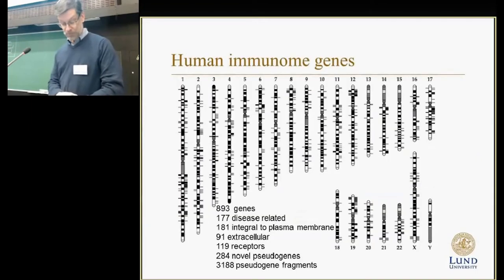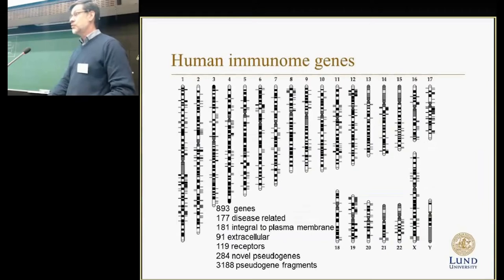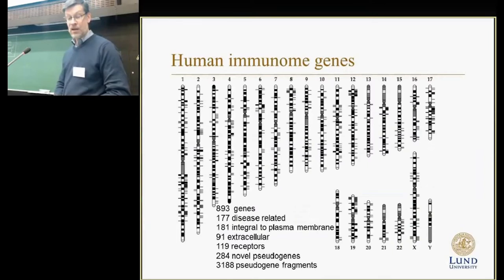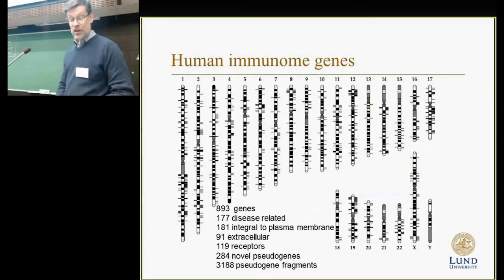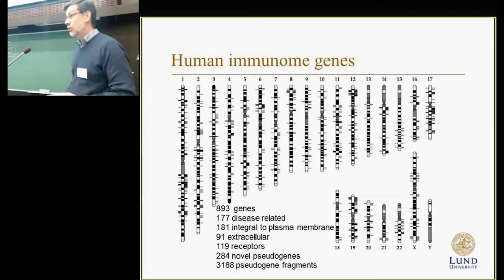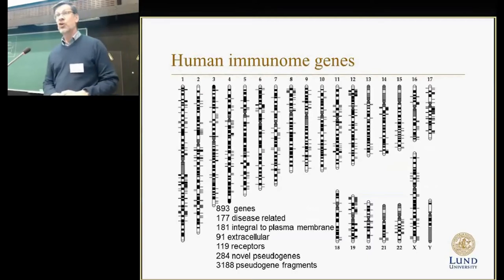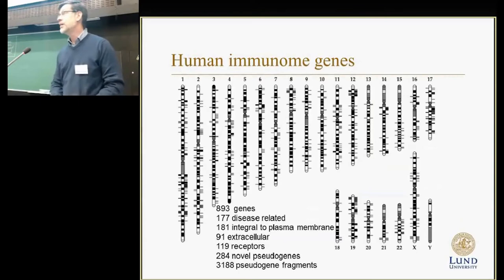Based on this analysis already a couple of years back, we identified about 900 genes and proteins — this is the human immunome. At that time, there were 177 disease-related genes known. Some other information covers those inside the plasma membrane, extracellular receptors, and so on. This kind of genomic study wouldn't be complete without looking at pseudogenes.